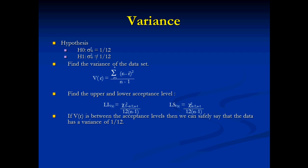We find an upper and lower acceptance level according to the formula, using the chi-squared distribution. If the variance we have calculated falls between these acceptance levels, then we can say the data has passed the test and has a variance of 1/12.